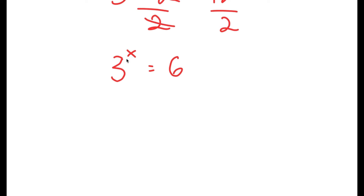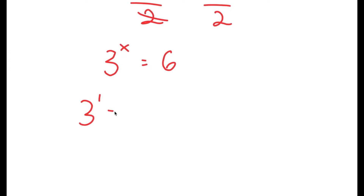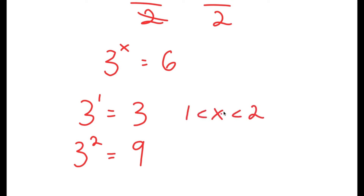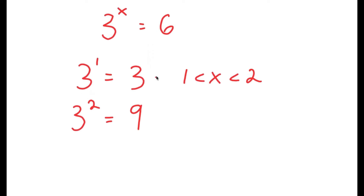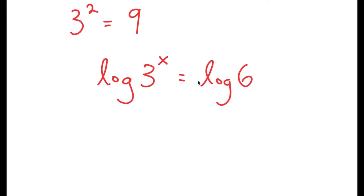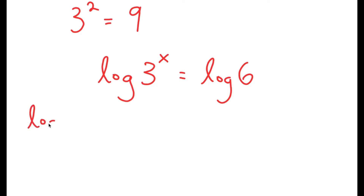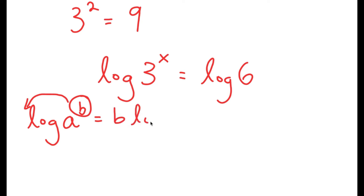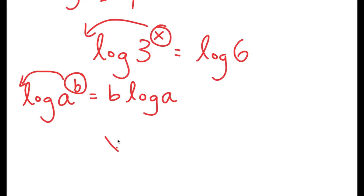To solve this, x is going to be a decimal because 3 to the power of 1 is 3 and 3 to the power of 2 is 9, so x is somewhere between 1 and 2. To find the exact value, I'll take the log on both sides: log of 3 to the power of x equals log 6. Using the rule that log a to the power of b equals b times log a, I move x to the front and get x times log 3 equals log 6.